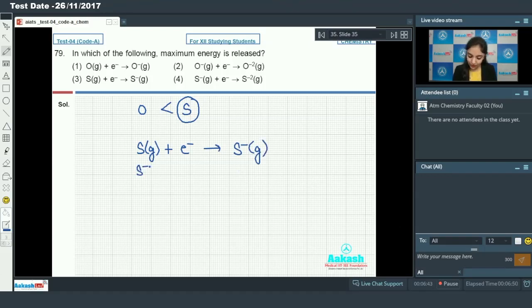And when the next electron is added to S negative means in this process we have to give the extra energy. So this process will be endothermic. But the first process will be exothermic. So option number 3 is our correct answer.